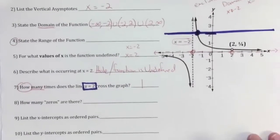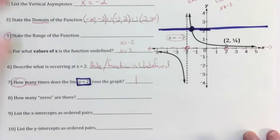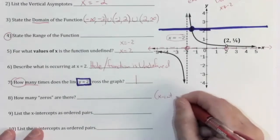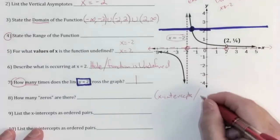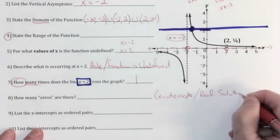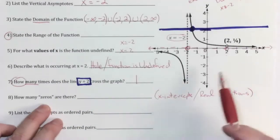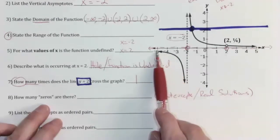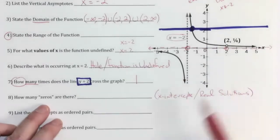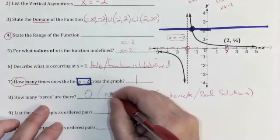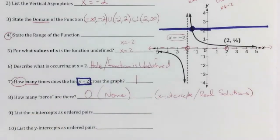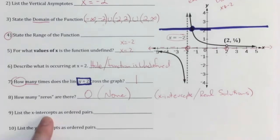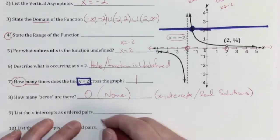Zeros of the function are the same thing as x-intercepts, and also the same as real solutions — they're all the same location on the graph. Looking at this graph, it doesn't cross the x-axis at all because the x-axis is an asymptote. The graph comes up and never crosses the x-axis on either side. So there are no zeros, meaning there are no x-intercepts.